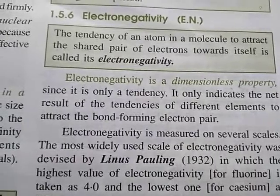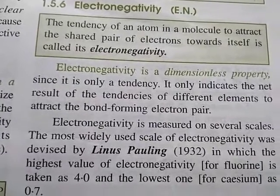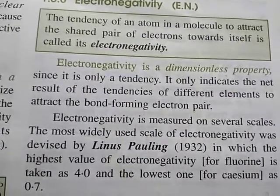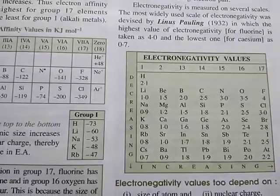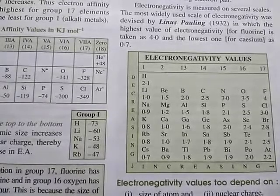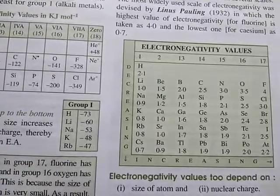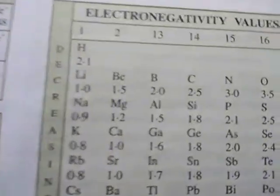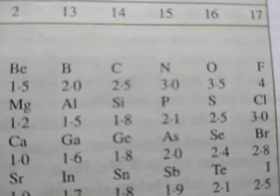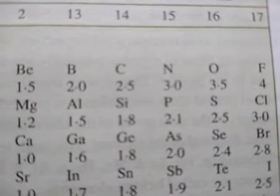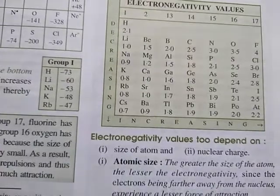One more property about electronegativity is that it is a dimensionless property — it is shown by numerical value only and has no unit. Now, which element is most electronegative in the whole periodic table? It is fluorine, and a value of 4 has been given for fluorine as its electronegativity.